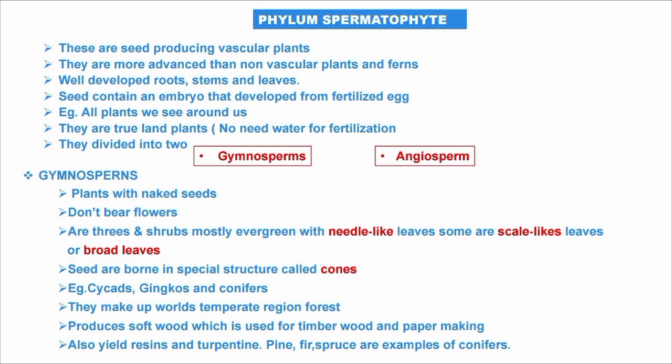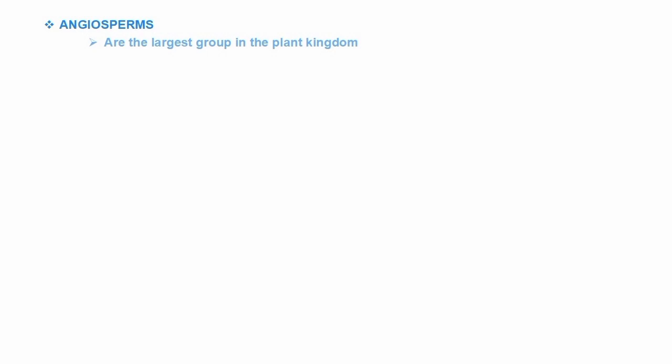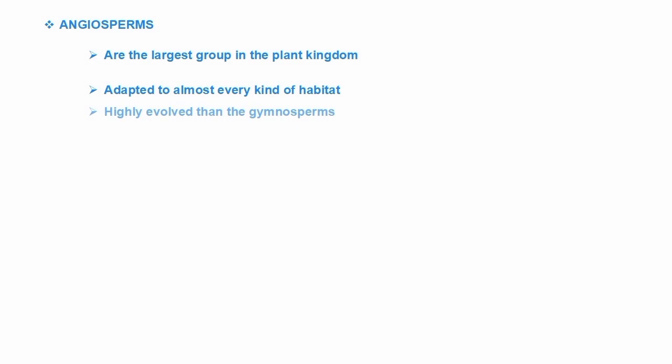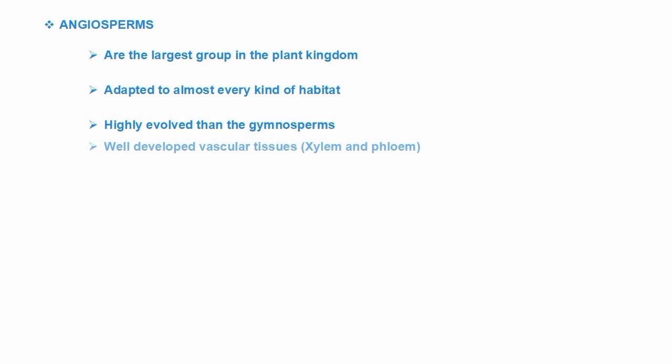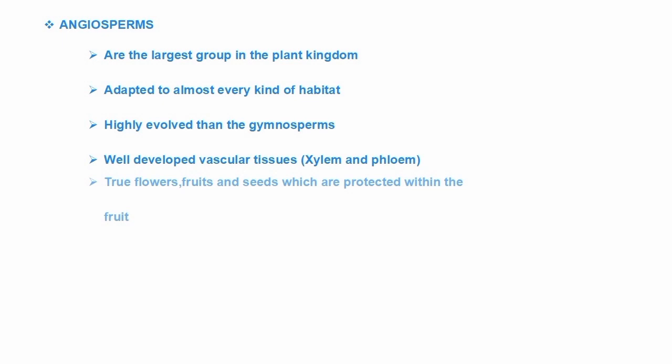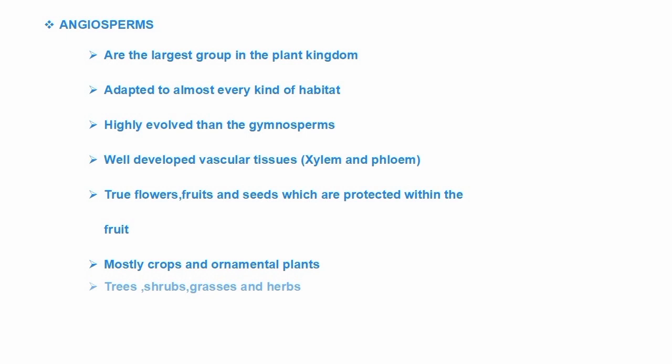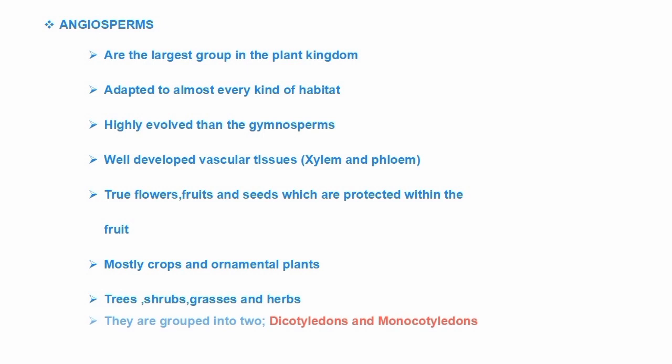Angiosperms are the largest group in the plant kingdom — the largest group under Spermatophyta. They are adapted to almost every kind of habitat and are more highly evolved than gymnosperms. They have well-developed vascular bundles — xylem and phloem. Their flowers, fruits, and seeds are protected within a fruit. They include mostly crops, ornamental plants, trees, shrubs, grasses, and herbs. Angiosperms are divided into two groups: dicotyledons and monocotyledons.